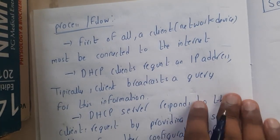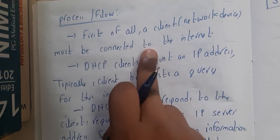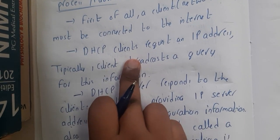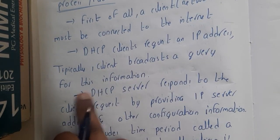First of all, a client - that is nothing but a network device - must be connected to the internet. DHCP clients request an IP address. Typically, the client broadcasts a query for this information.